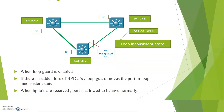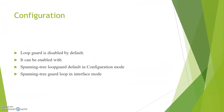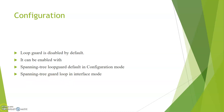Loop Guard is disabled by default. It can be enabled either with the command 'spanning-tree loopguard default' in global configuration mode, or by going into the interface mode and specifying 'spanning-tree guard loop'. Thanks for watching — please subscribe for more videos.